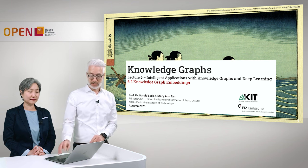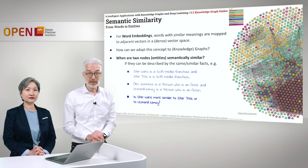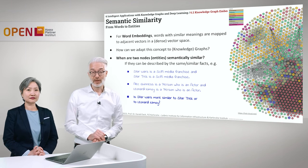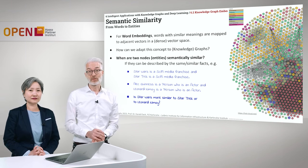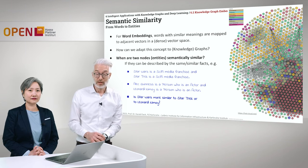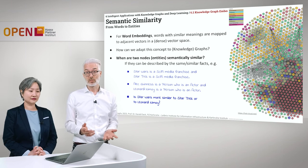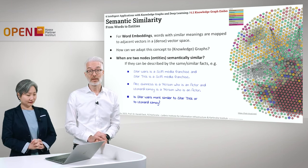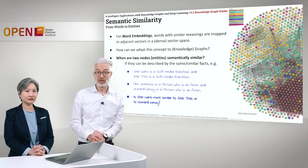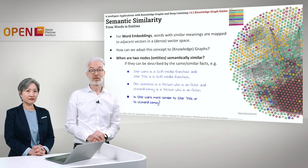In this section of the lecture we are going to talk about Knowledge Graph Embeddings. We are going to take the concept of semantic similarity that we have already learned about in the last excursion in the natural language domain to the graph domain. For word embeddings, words with similar meanings are mapped to adjacent vectors in a dense vector space. The question is: how can we adapt this concept to Knowledge Graphs?